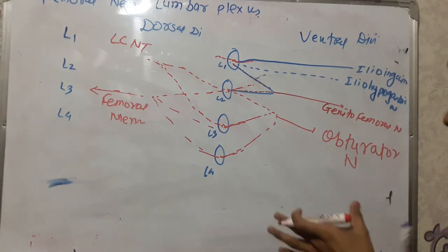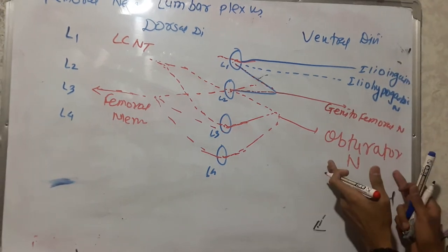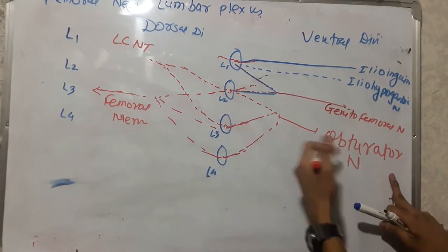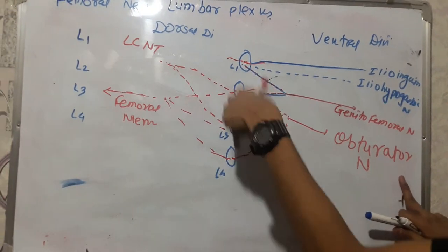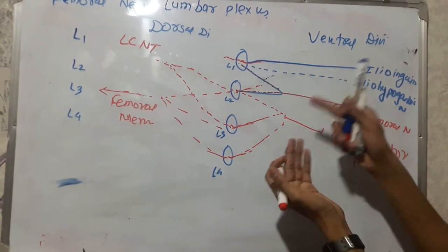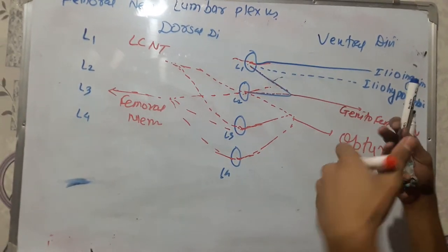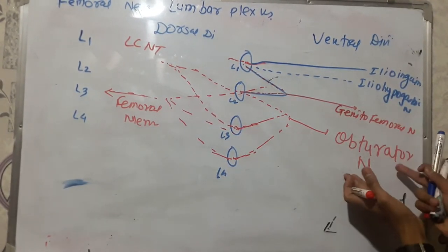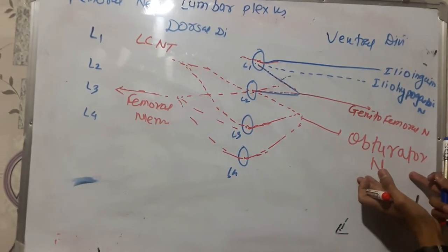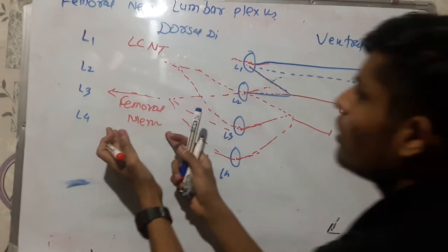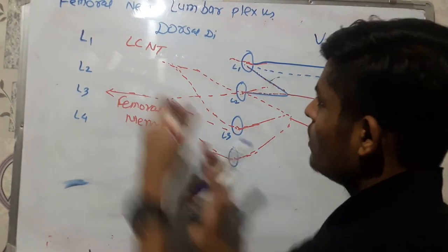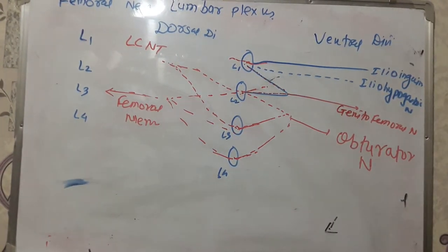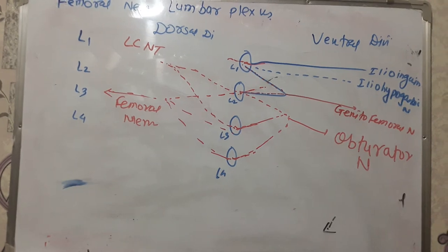Make sure: the obturator nerve and femoral nerve both have the same root value — they are arising from the same spinal segments L2, L3, and L4. But the difference is only in their divisions. The obturator nerve is arising from ventral divisions, while the femoral nerve is arising from the dorsal divisions of the L2, L3, and L4 spinal nerves.